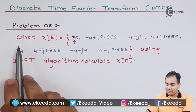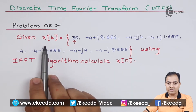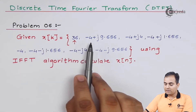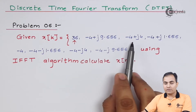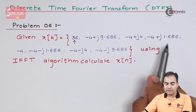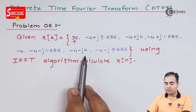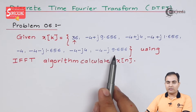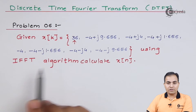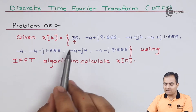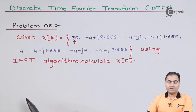Problem number 6: calculate x[n] using the IFFT algorithm, where the DFT sequence X[k] is given as: 36, minus 4 plus j9.656, minus 4 minus j4, minus 4 plus j1.656, minus 4, minus 4 minus j1.656, minus 4 plus j4, and minus 4 minus j9.656. If the origin sign is not given, we assume the first sample is the origin. Now we will see the IFFT algorithm structure.